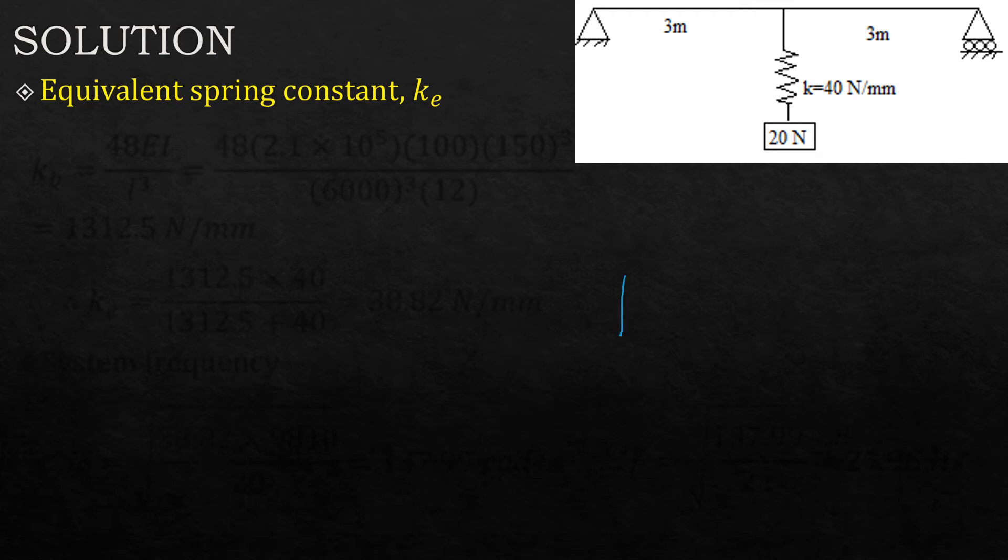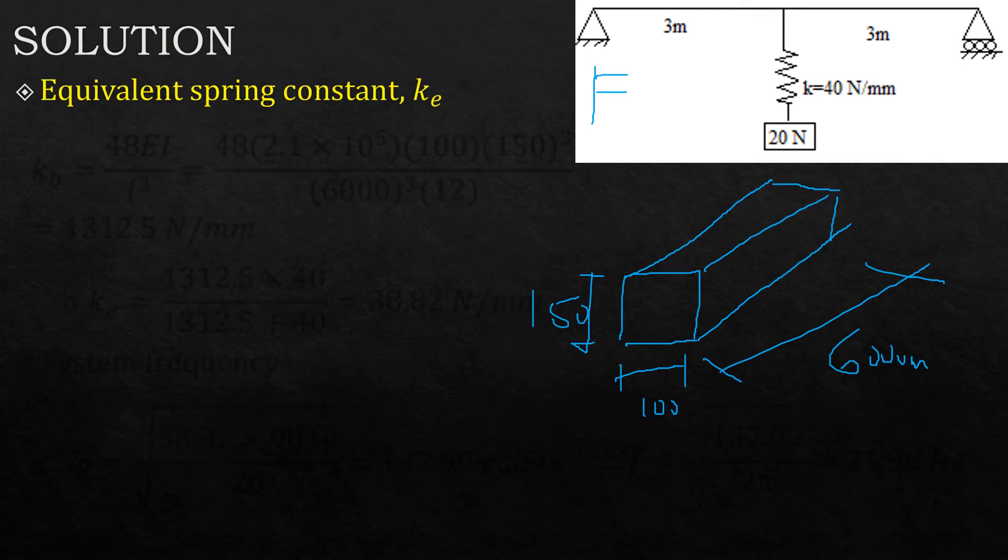We are given the beam cross section—you're given the breadth, this is 100 millimeters, you are told the depth is 150 millimeters, and the length is 6000 millimeters or six meters. Remember you have to be consistent with the units. In this case for the beam which is simply supported, we know of course k is derived. Remember the expression F = k times delta, or k = F over delta.